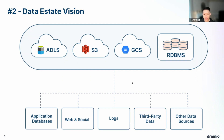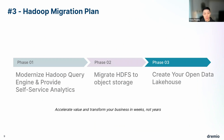Once you identify the data state vision, the next step is to consider your migration plan. We recommend a phased approach to Hadoop migration. Step one was identifying the business case to get funding, step two was looking at the data state vision, and now step three is mapping out the Hadoop migration plan across three phases. Phase one: modernize the Hadoop query engine and provide self-service analytics.